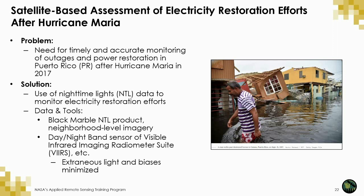In 2017, Hurricane Maria devastated the island of Puerto Rico, knocking out power to the majority of customers and causing significant loss of life. As crews began cleanup and power restoration efforts, a team of NASA researchers sought to monitor electricity restoration using the Black Marble product, which measures nighttime lights. The Black Marble product allowed Dr. Miguel Roman and colleagues to overcome four main limitations of power outage data: timeliness, because near real-time data is needed; continuous data collection; consistent data collection across a large geographic area; and availability of data at the street level. The Black Marble product is cloud-free and corrects for a variety of parameters known to interfere with the validity of the data.